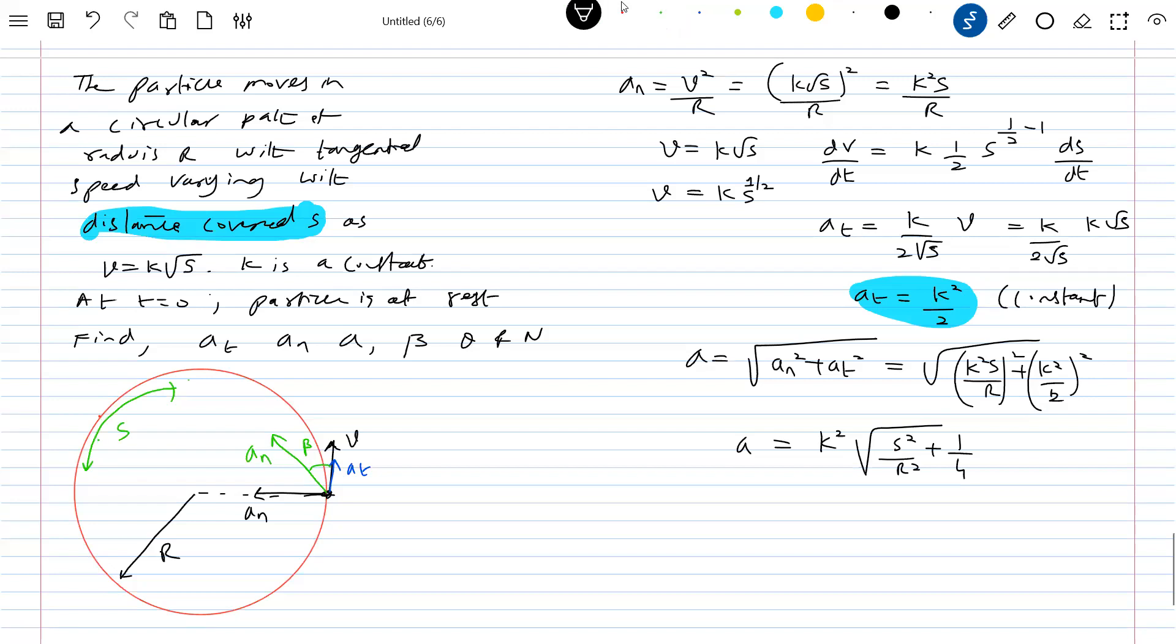Look at the tan beta. It also varies in one particular way. Tan beta, An by At. So what is the value of An? An was K square S by R. This is only K square by 2. So 2S by R.